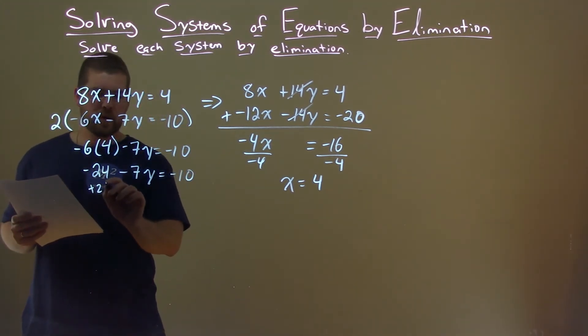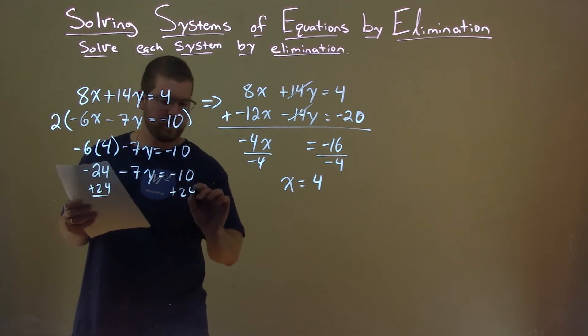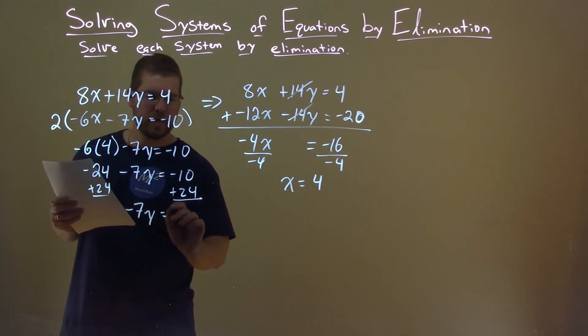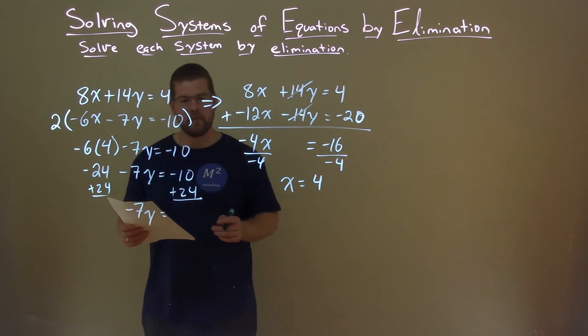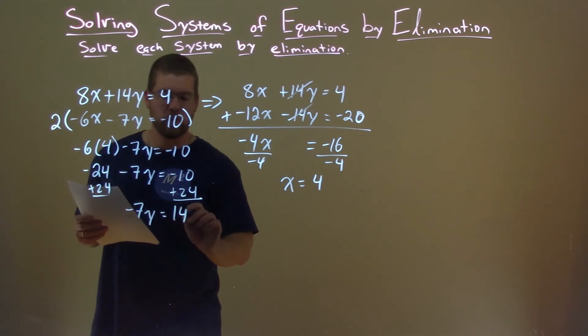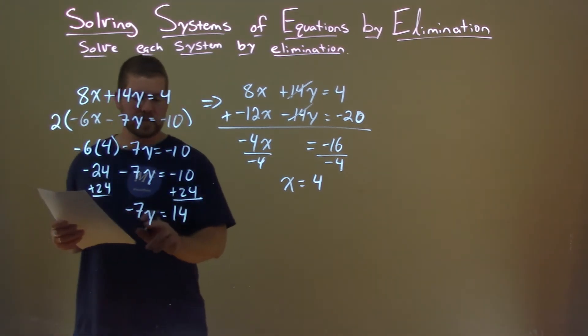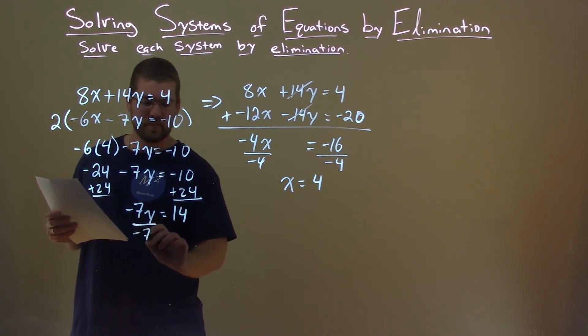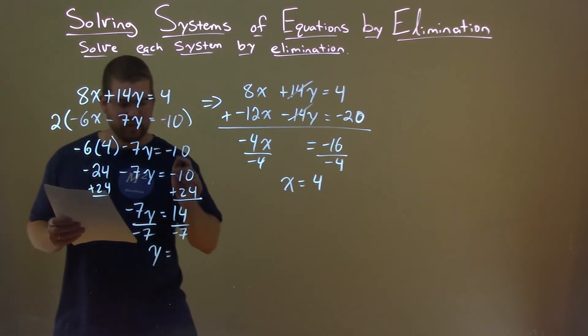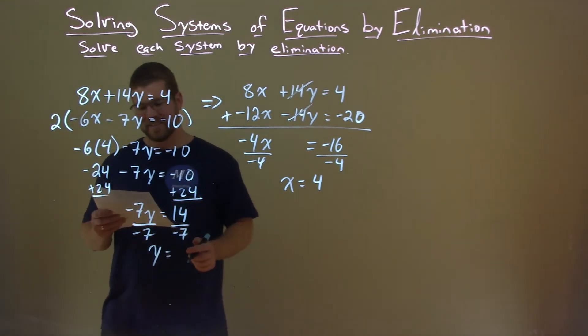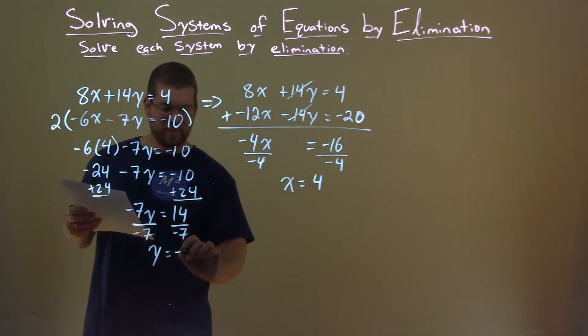Add 24 to both sides. And negative 7y equals negative 10 plus 24, which is positive 14. Divide both sides by negative 7, and we're left with y by itself.